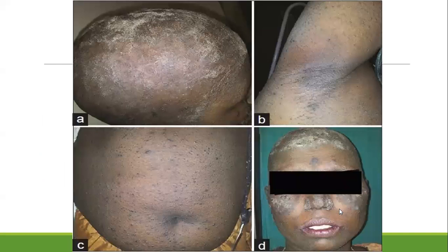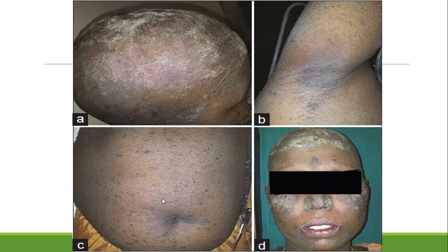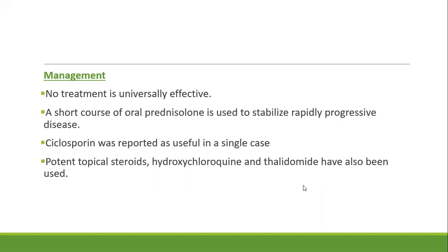Images of Graham-Little syndrome show cicatricial alopecia, follicular lichen planus-like lesions on the trunk, keratosis pilaris-like lesions, and non-cicatricial hair loss in the axilla. There is no universally acceptable treatment. A short course of oral prednisolone is used to stabilize rapid progression. Cyclosporine is reported useful in a few case reports. Potent topical corticosteroids, hydroxychloroquine, and thalidomide are all tried and found reasonably effective.